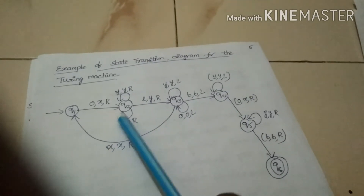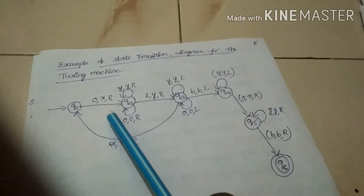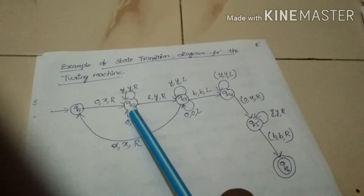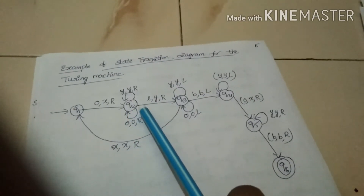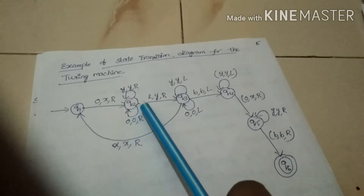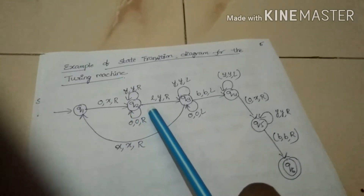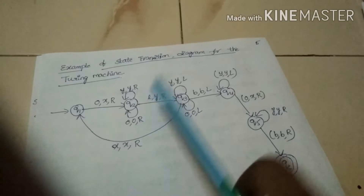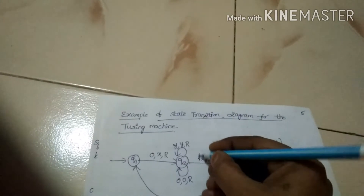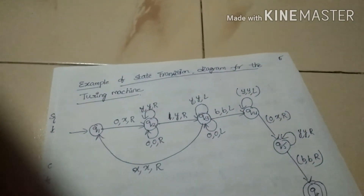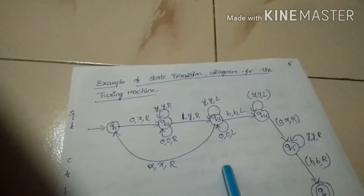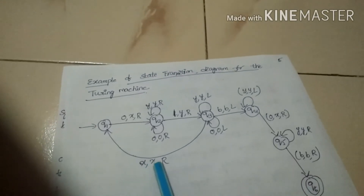At that point, the read-write head scans the value 0. There is a loop in the state transition diagram at state Q2 that will move the read-write head in the right direction. The read-write head position is now at value 1, and the state of the Turing machine is still Q2.